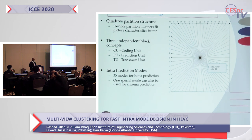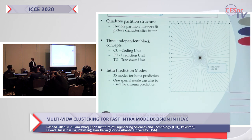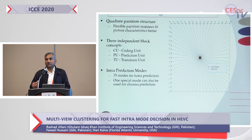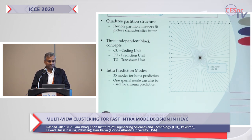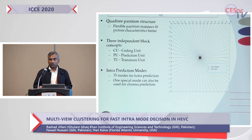HEVC intra-coding is actually implemented using quad-tree partition structures. There are independent tree block concepts which include coding unit, prediction unit, and transform unit. Intra-prediction modes particularly got more complex compared to H.264 — it has introduced 35 modes for Luma prediction and one special mode for Chroma prediction. The idea here is to convey how much complexity was introduced compared to the previous version.